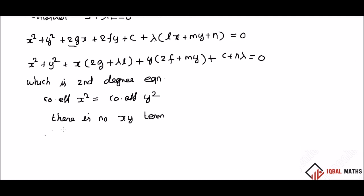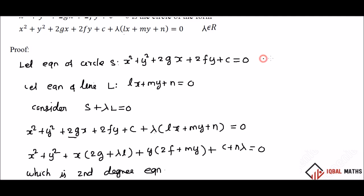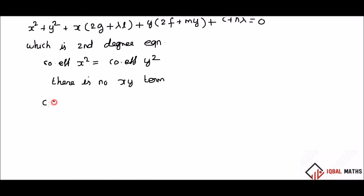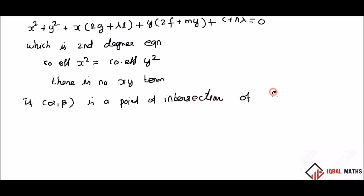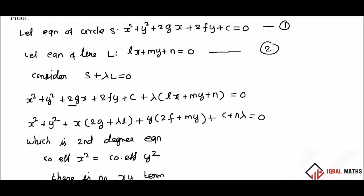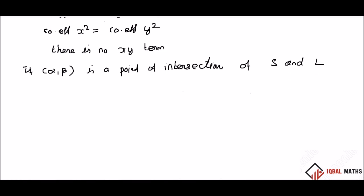Now we have a point on the circle. We have to take a point on the circle. If you apply alpha, the answer is equal to 0. If we apply a root to the circle, it is also equal to 0. The answer is zero, so if you apply it here, that answer is zero.